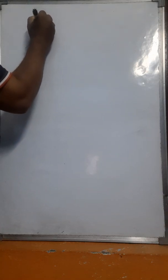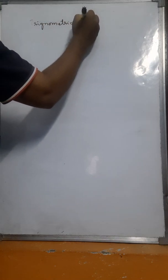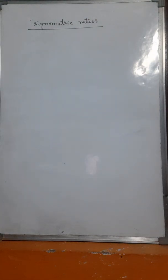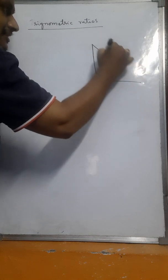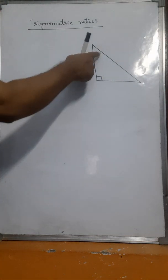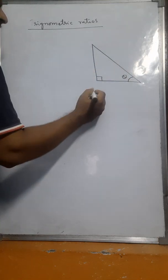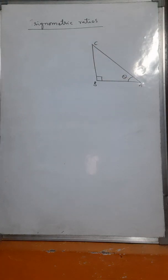Today we are going to discuss trigonometric ratios. I am taking a right angle triangle ABC, which is a right angle triangle at B, and it has two acute angles.